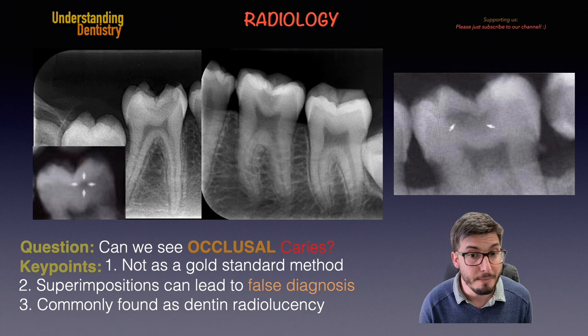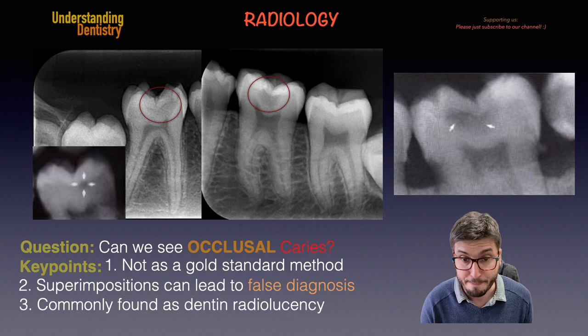We also have caries in the images in the middle, and now you can see the red circles showing clinically confirmed caries as well. Those were the key points about occlusal caries to help your studies. If you liked it, click the like button, and see you in the next videos.